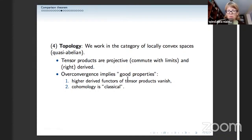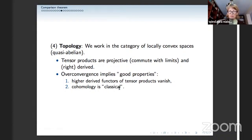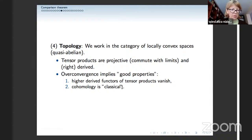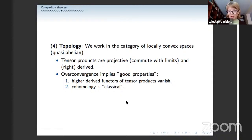Over-convergence implies good properties: locally we have a lot of finiteness, higher derived factors of tensor products often vanish, and the cohomology which appears is often classical — you get genuine objects rather than pairs of two objects. The algebraic cohomology you obtain is actually the one in the abelian envelope of this quasi-abelian category. Everything behaves reasonably well.